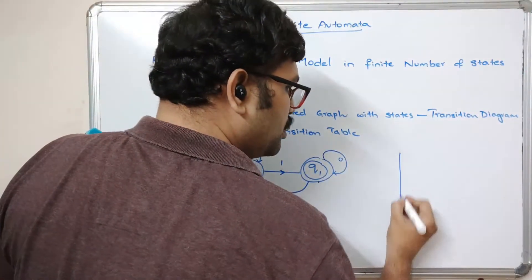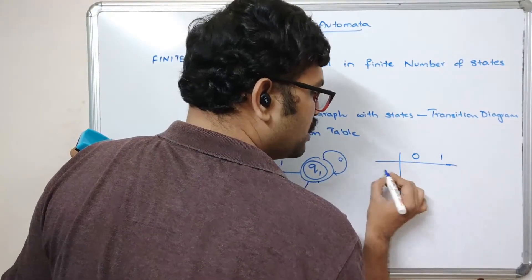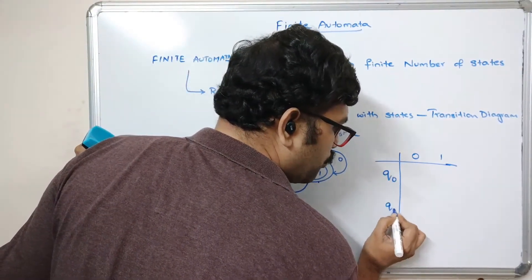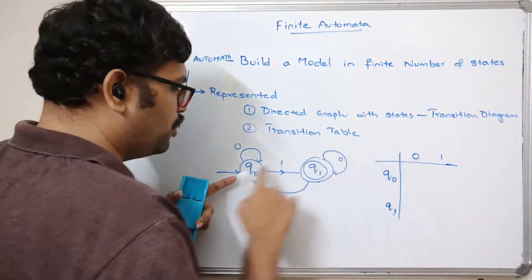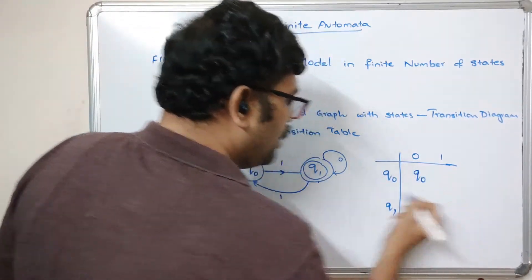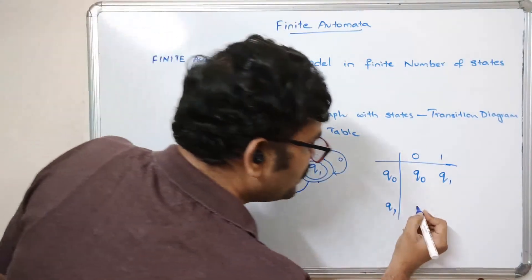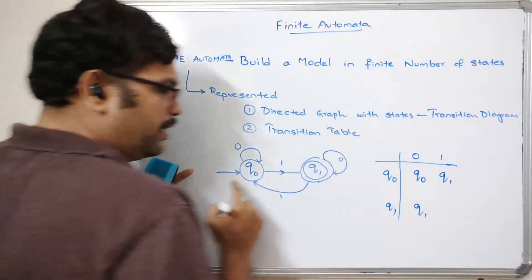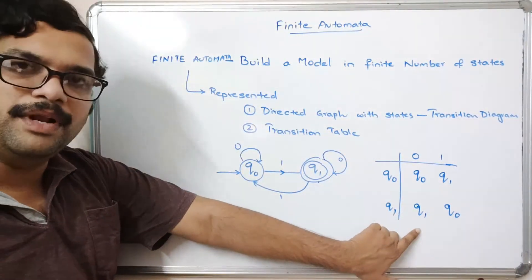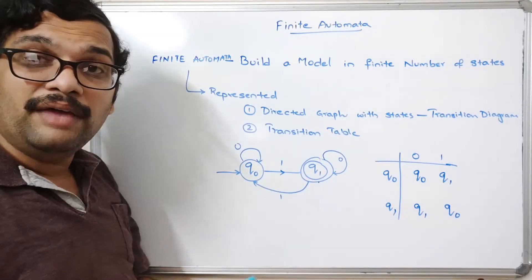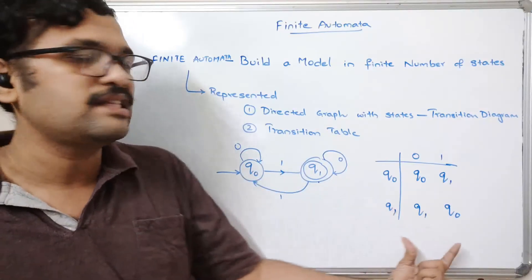Coming to the transition table, you can represent it in rows and columns: take the columns as input symbols and the rows as states, Q0 and Q1. You simply fill the table based on the diagram. Q0 on 0 moves to Q0 itself; Q0 on 1 changes to Q1; Q1 on 0 remains in the same state; Q1 on 1 moves back to Q0. This is the transition table for this finite automata.